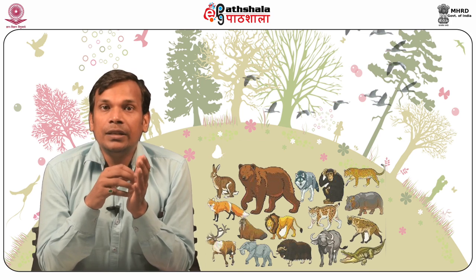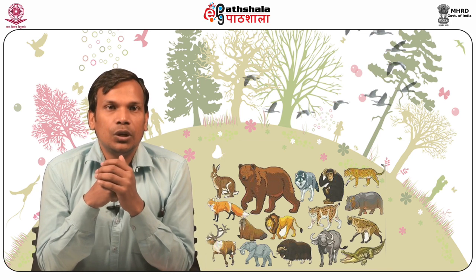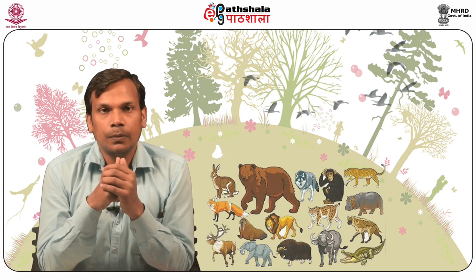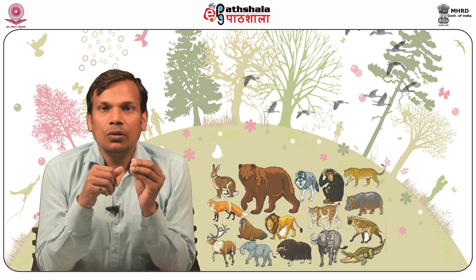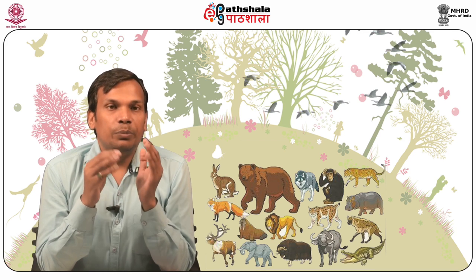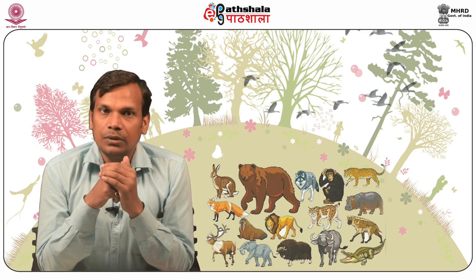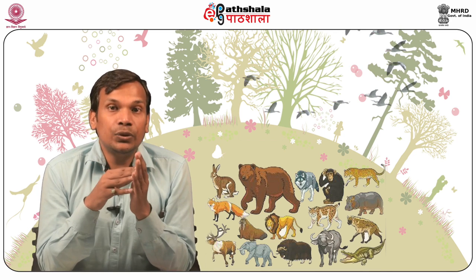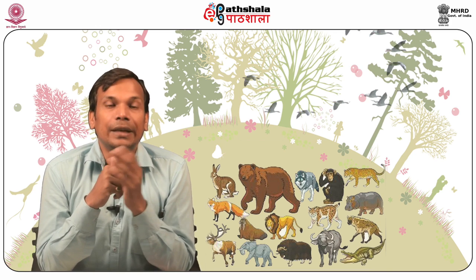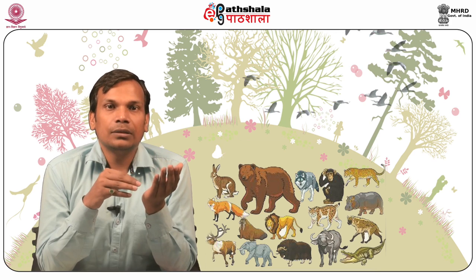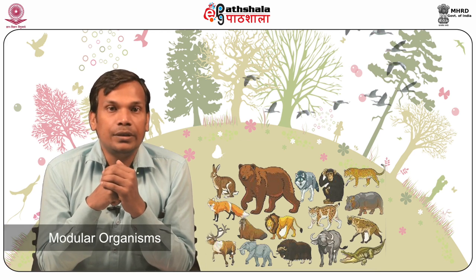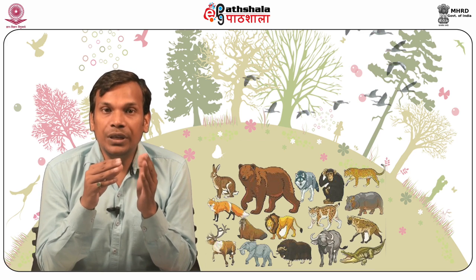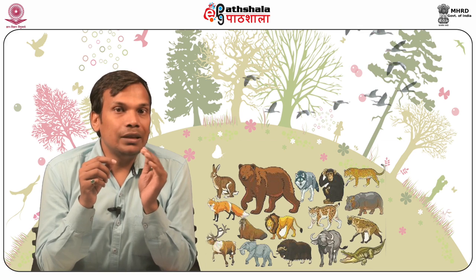A population may be defined as a group of organisms of the same species occupying a particular space at a particular time. The ultimate constituent of the population is the individual. On the basis of this, we can divide it into two types. First is unitary organisms — organisms that can be distinguished as a single unit, for example, insects, fish, zebra, etc. Another type is modular organisms, which do not come as a simple unit but appear to be an individual, like grasses.